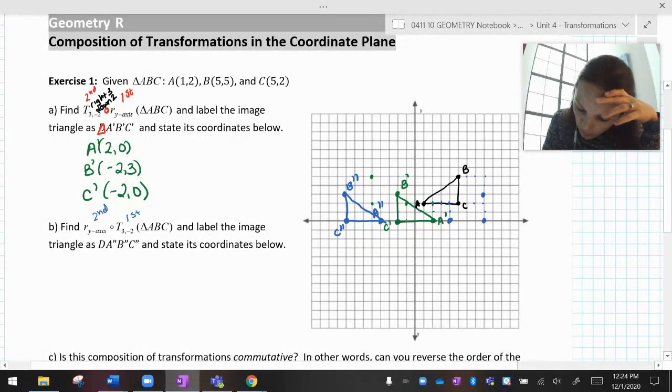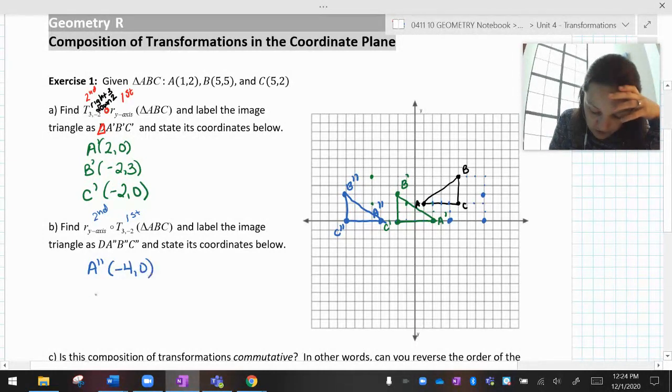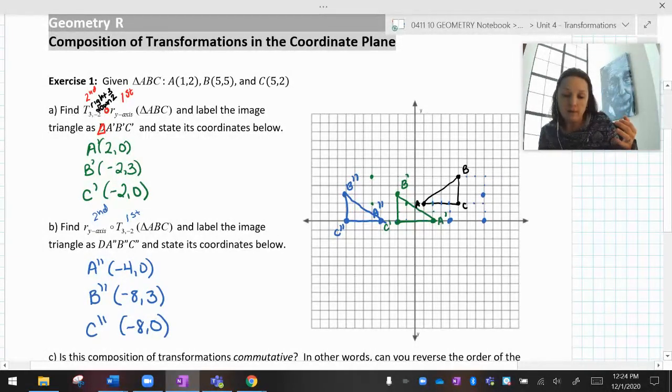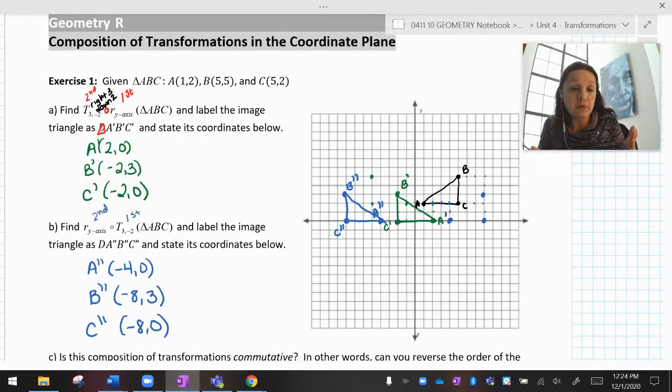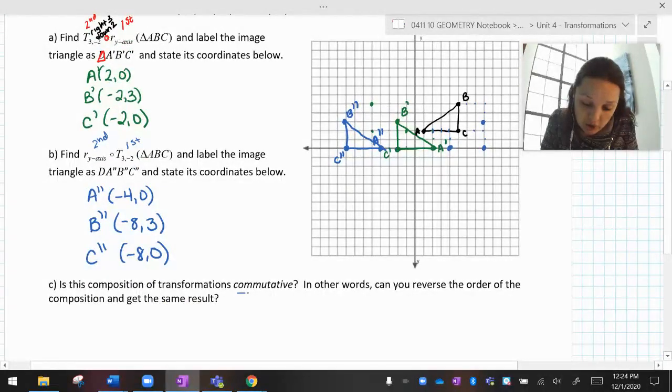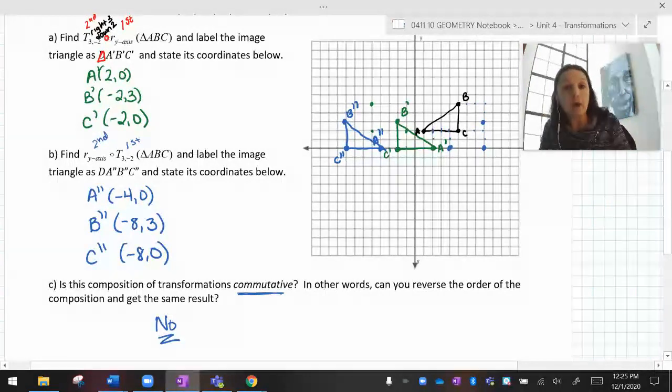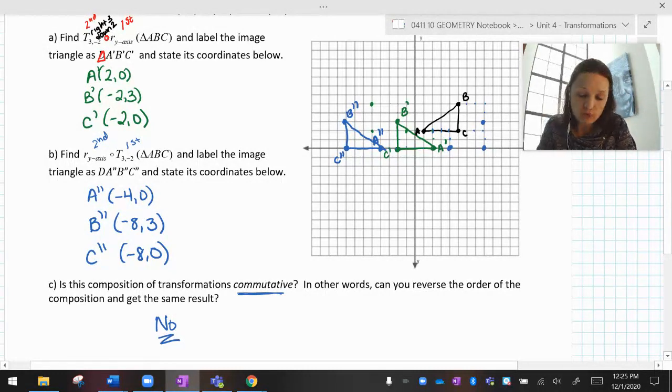And then if I state those coordinates, I would have A is (-4, 0), B is (-8, 3), and C is (-8, 0). Okay. So these are different. Okay. If I slide it and then flip it, that's different than flipping it and then sliding it. So is composition commutative? No. No, it is not. Okay. Sometimes it is, but you can't assume so.